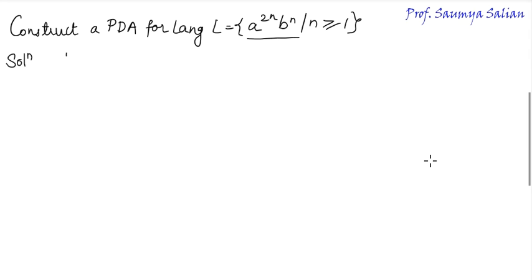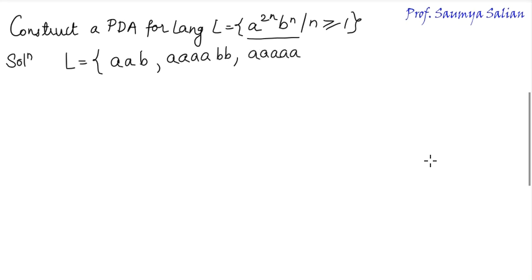We first define the language. When n is equal to 1, we have the string 'a, a, b' — the smallest valid string. When n is equal to 2, we have 'a, a, a, a, b, b'. When n is equal to 3, we have 'a, a, a, a, a, a, b, b, b, b' and so on.